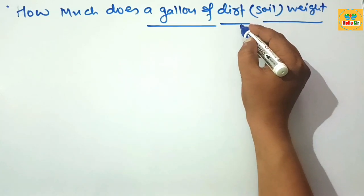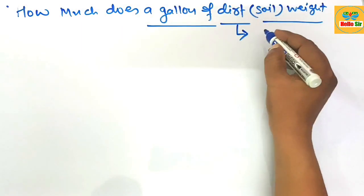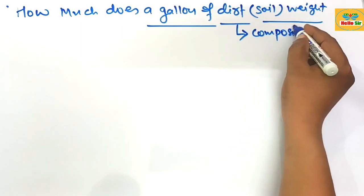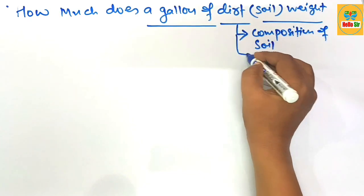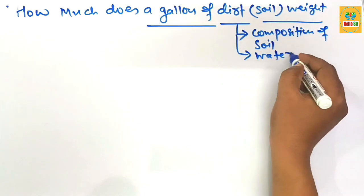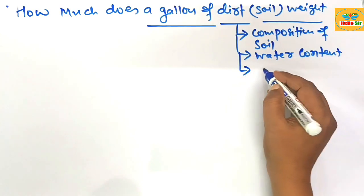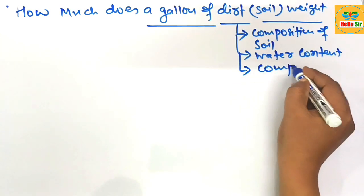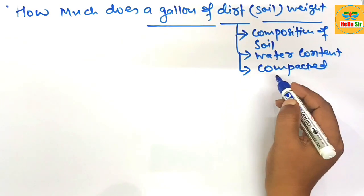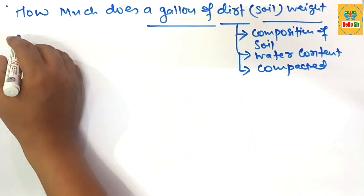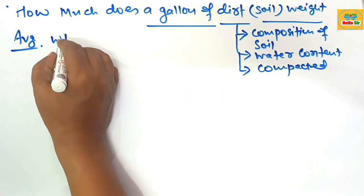To calculate the weight of one gallon of dirt, first you need to know that the weight of dirt depends on many factors like the composition of soil, the water content, and how well the soil is compacted. These are the several factors that determine the weight of one gallon of dirt.